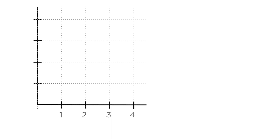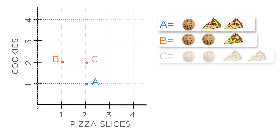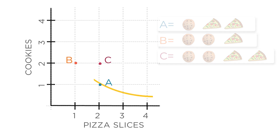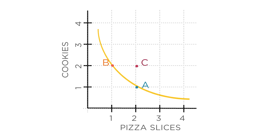Let's graph these preferences. First, we plot a point for each of the bundles. The x-axis, or horizontal axis, will reflect the number of pizza slices. The y-axis, or vertical axis, will reflect the number of cookies. So bundle A would be placed at two slices on the x-axis and one cookie on the y-axis, and B and C go here and here. Since you're just as happy with bundle A as you would be with bundle B, we can draw an indifference curve that passes through points A and B. All points on this indifference curve, including A and B, represent bundles between which you're indifferent. You'd be just as happy with one pizza and two cookies as with half a slice and three cookies, or with four slices and half a cookie.